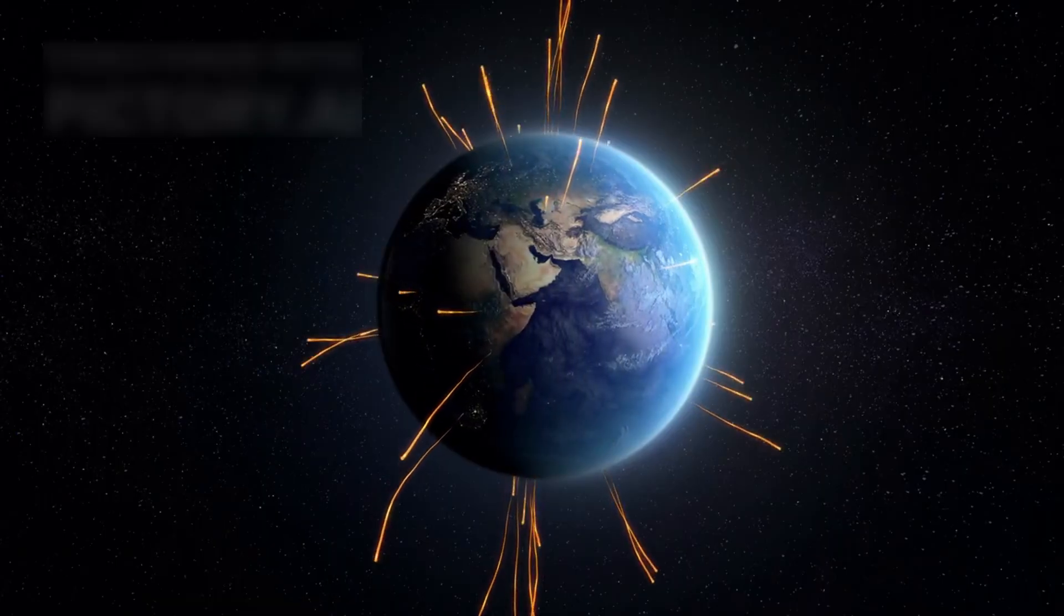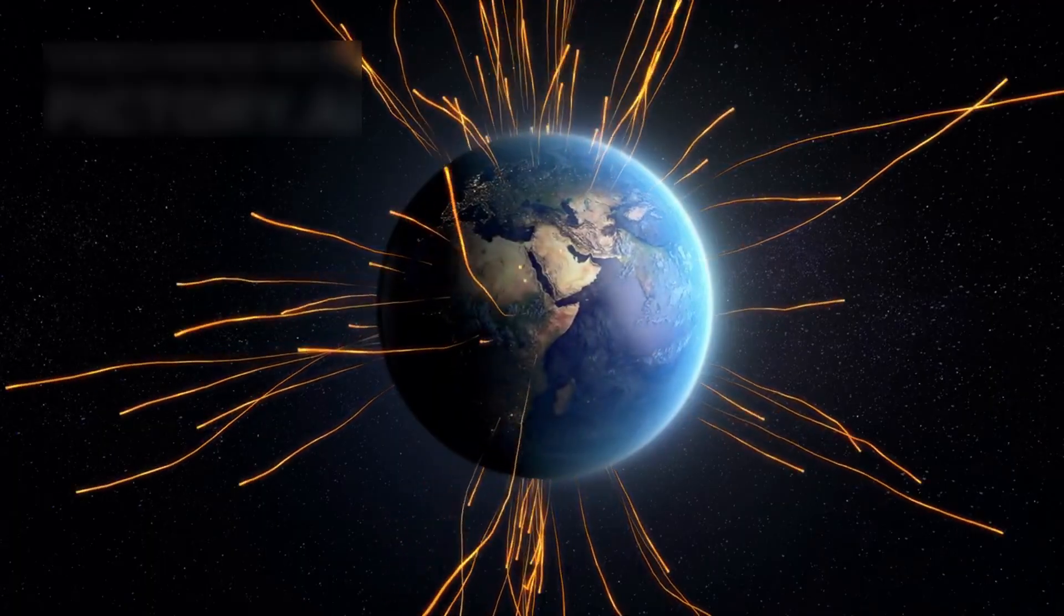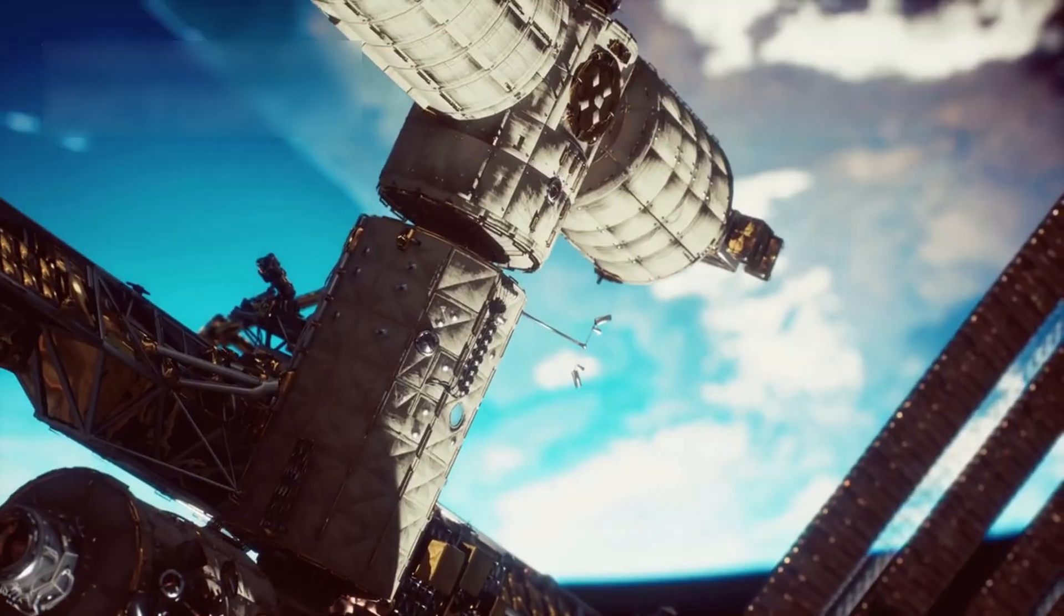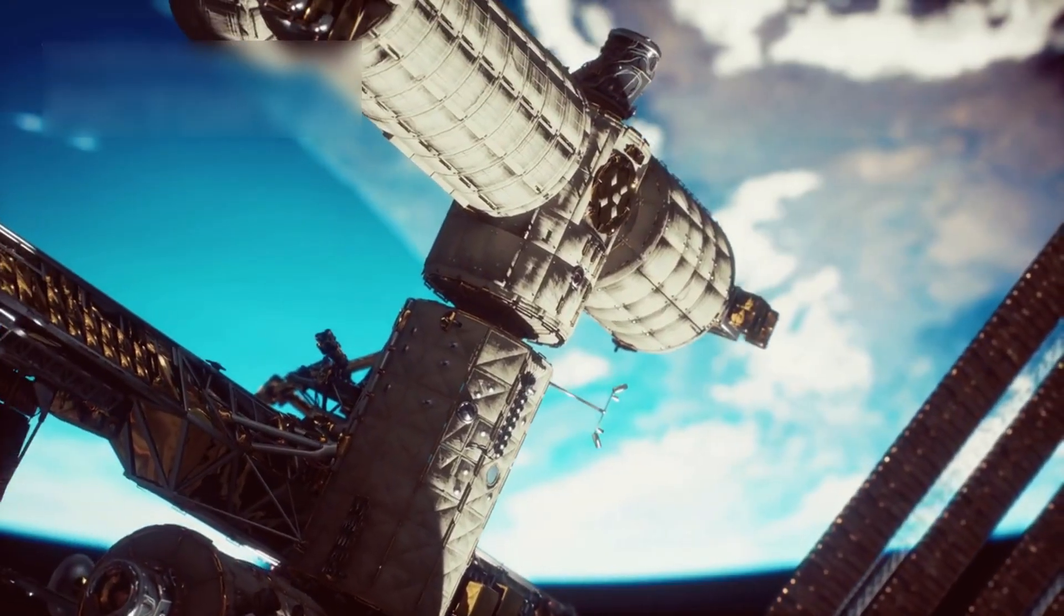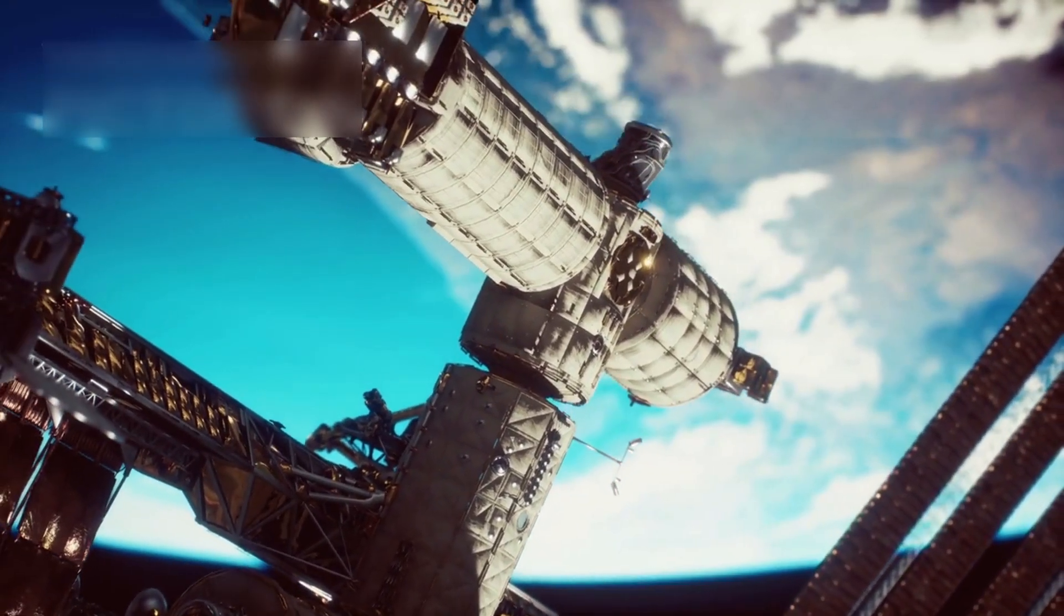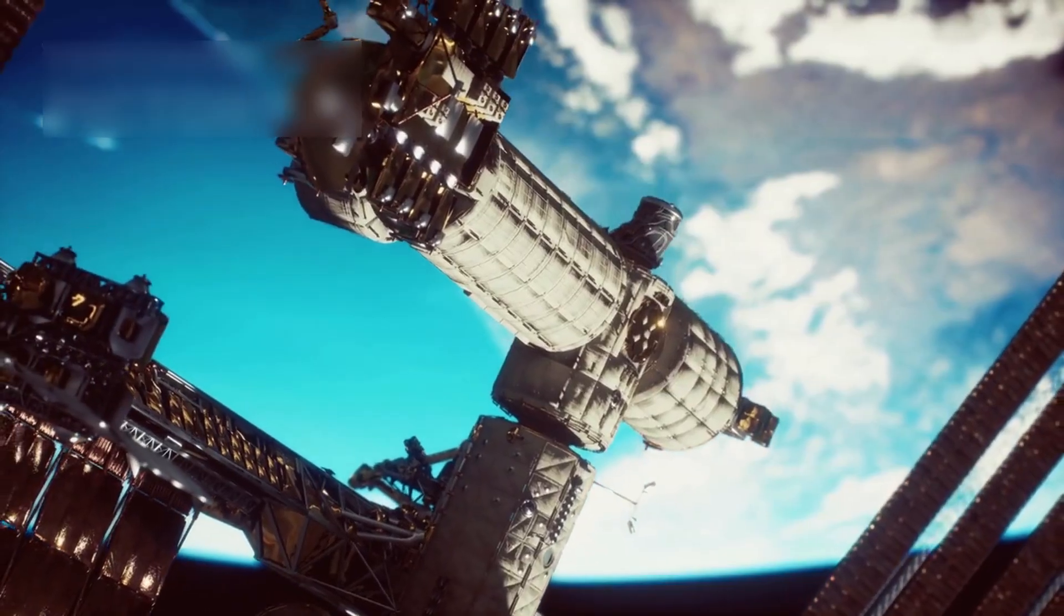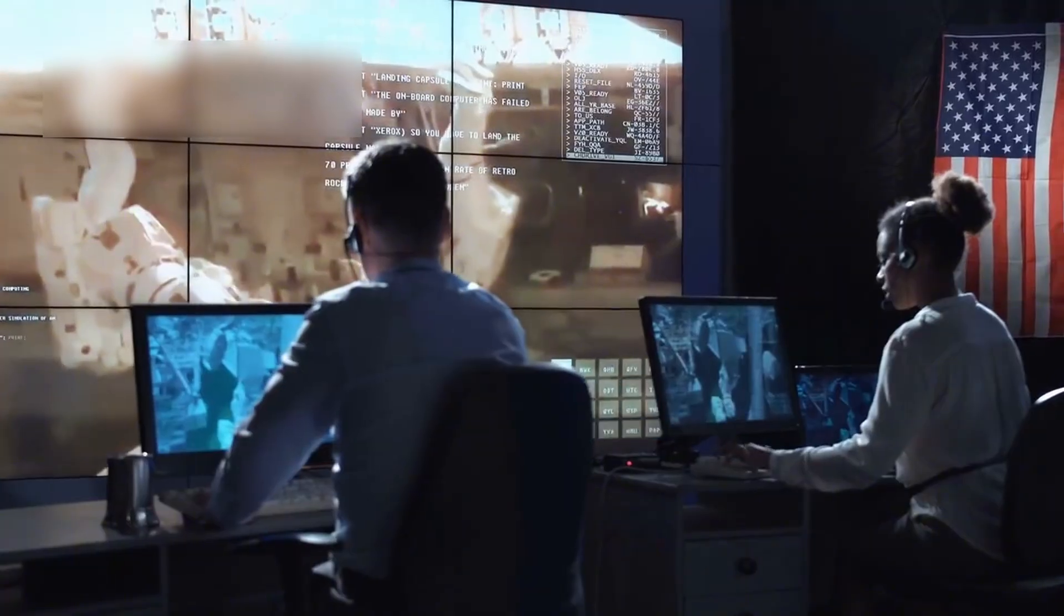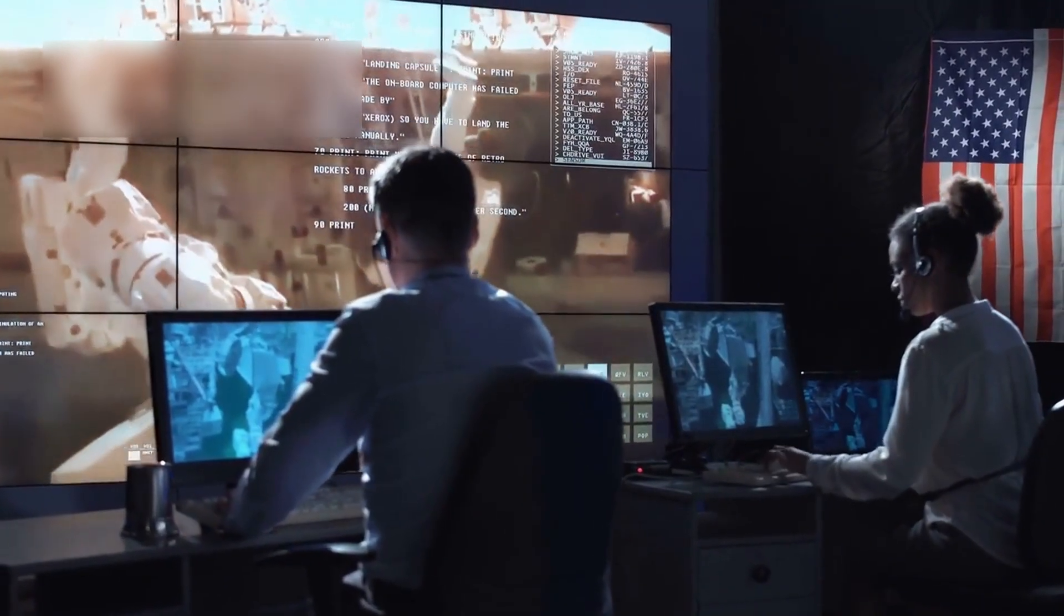Today, Voyager 1's radio signals take over 22 hours to reach Earth. Its power, generated by slowly decaying radioisotope thermoelectric generators, is fading. But engineers continue to reroute systems, turning off non-essential functions to keep the mission alive.